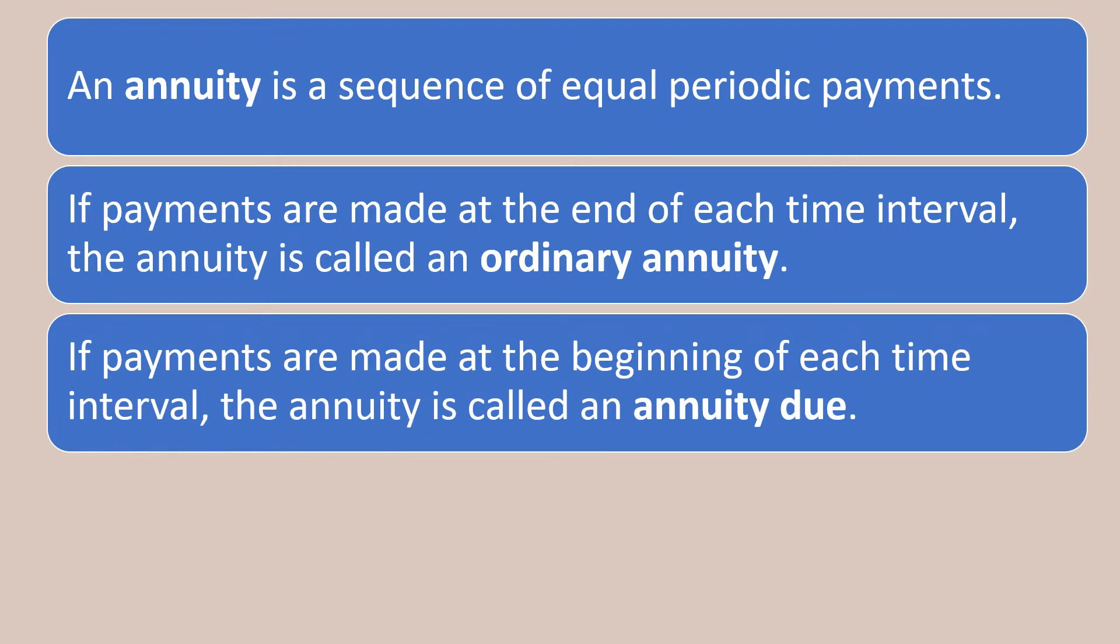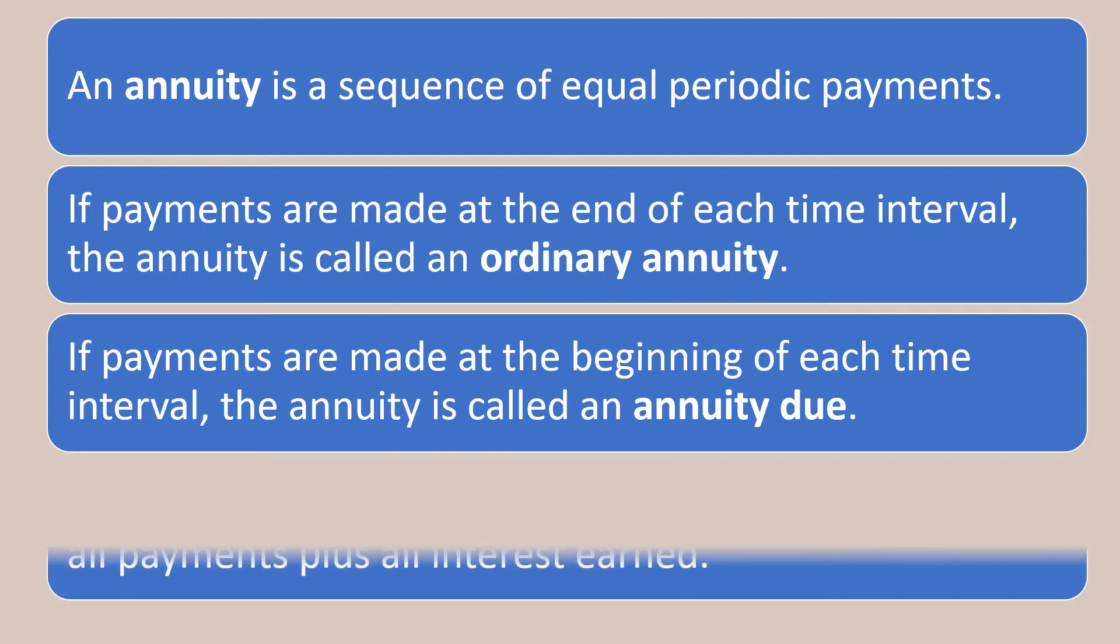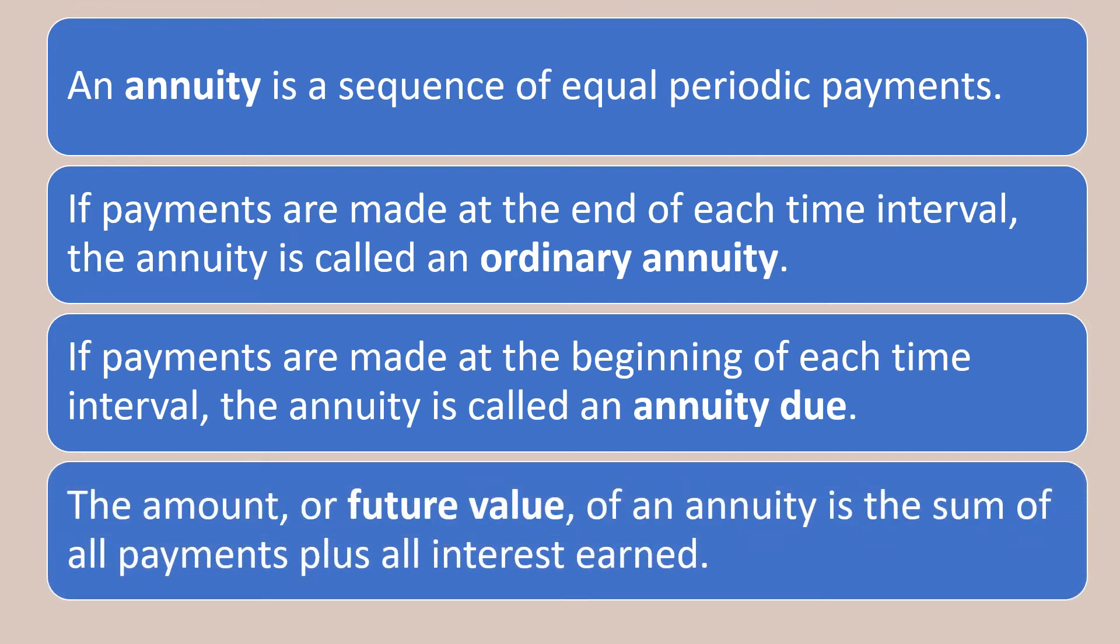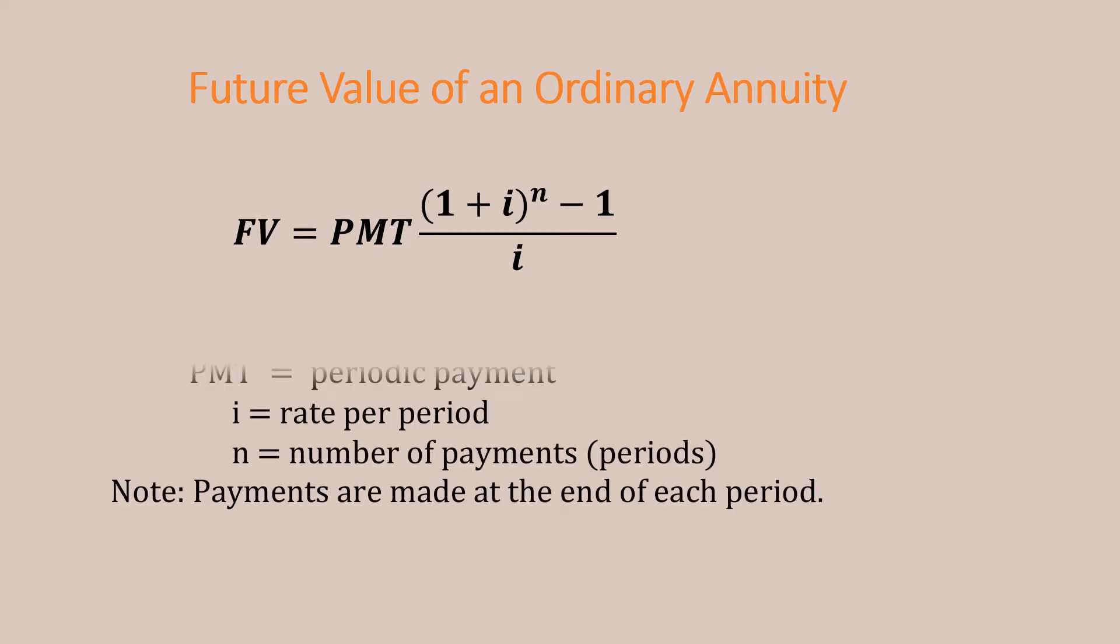The amount or future value of an annuity is the sum of all the payments plus the interest earned. So the future value of an ordinary annuity is calculated using the formula: FV = PMT × [(1 + i)^n - 1] / i, where FV is the future value, PMT is the periodic payment, i is the rate of interest per period (usually in decimals), and n is the number of payments. Period payments are made at the end of each period.